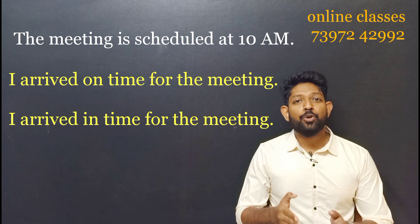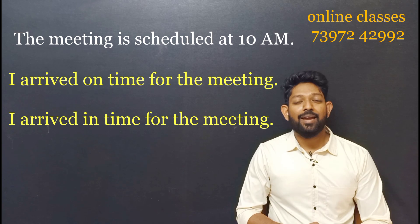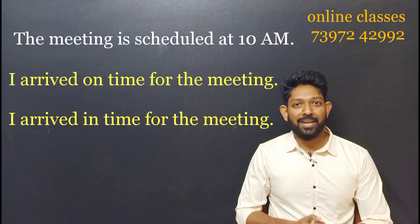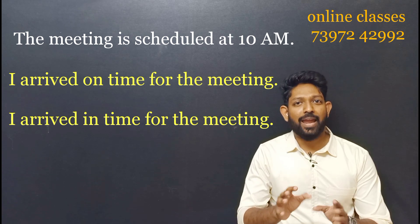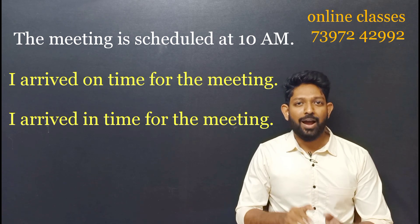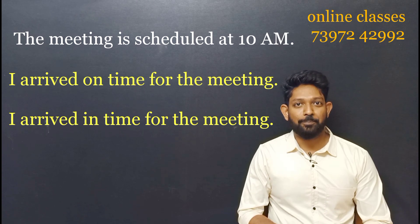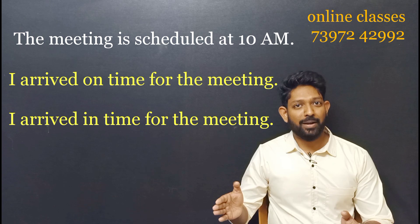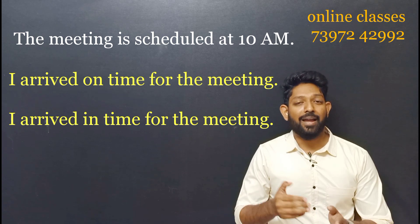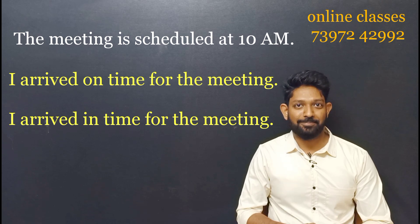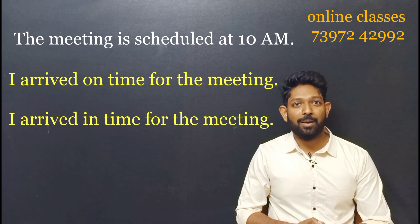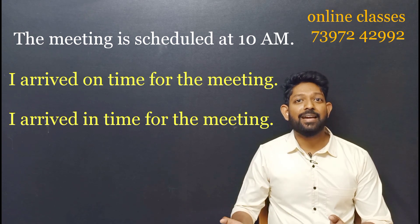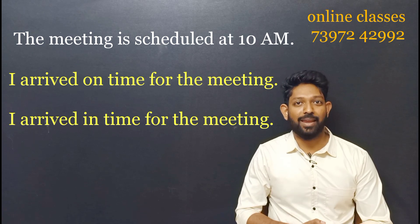Consider: 'I arrived on time for the meeting.' There is a difference in meaning. 'On time' means at the scheduled time — for example, if the meeting is at 10am, you arrived at exactly 10am. So if you check the time as 9:45 or 9:30, you arrived before the scheduled time.